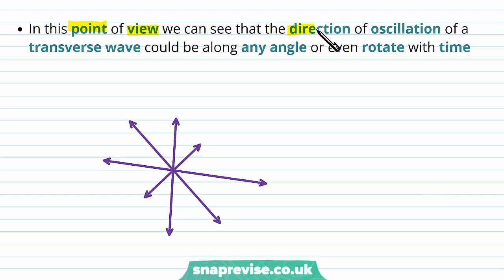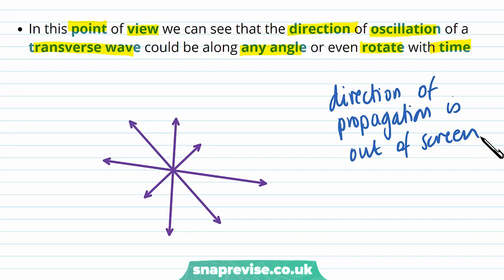From this point of view, the direction of oscillation of a transverse wave could be along any angle or even rotate with time. The direction of propagation is out of the screen, meaning it's perpendicular to the plane of the screen. This tells us we could have lots of different directions of oscillation, provided they all lie within the plane of the screen — all perpendicular to the direction of propagation.